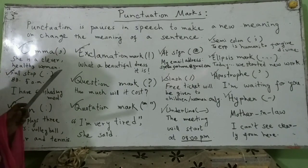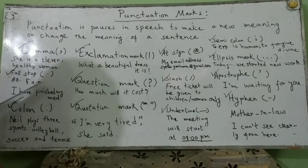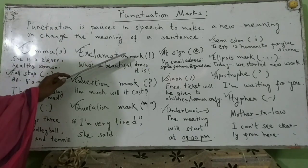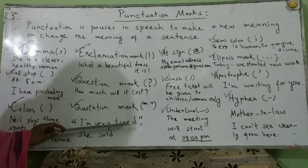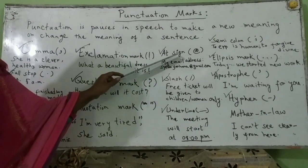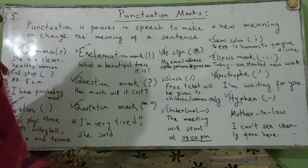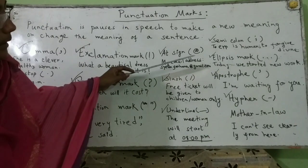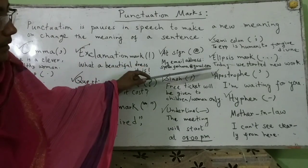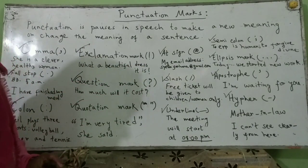Let's now know about the types of punctuation marks: comma, full stop, colon, exclamation mark, question mark, quotation mark, at sign, slash, underline, semicolon, ellipsis mark, apostrophe, and hyphen.